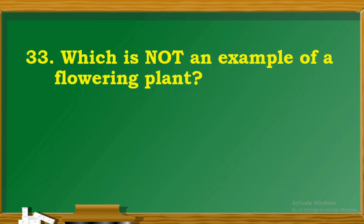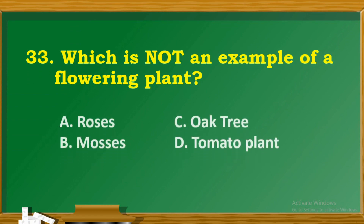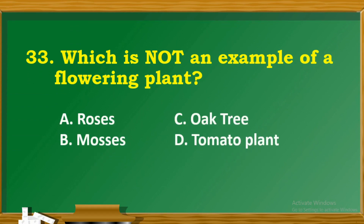Question 33: Which is not an example of a flowering plant? A. Roses. B. Moss. C. Oak tree. D. Tomato plant.